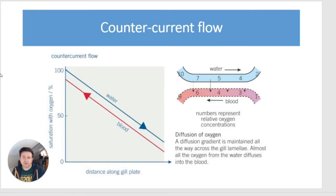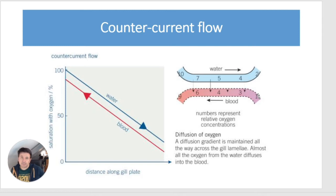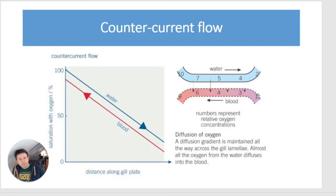What actually happens is counter current flow: blood travels in one direction and water in the other. Diffusion occurs at every point across the whole length of the gill, so a diffusion gradient is maintained all the way across the gill lamellae. Almost all the oxygen from the water diffuses into the blood, making this a very effective and efficient system. The fish then closes its mouth to decrease volume, increase pressure, and push the deoxygenated water out through the opercular valve.